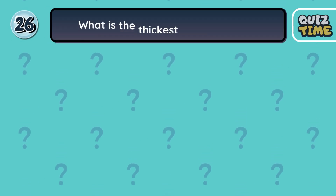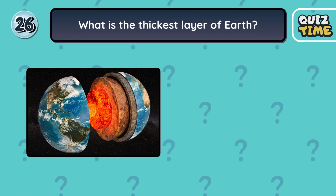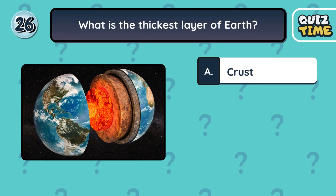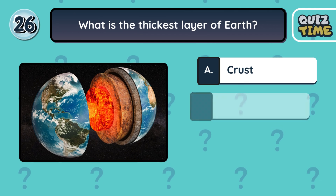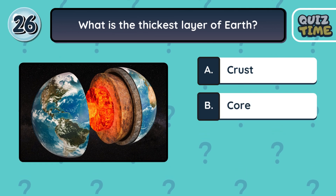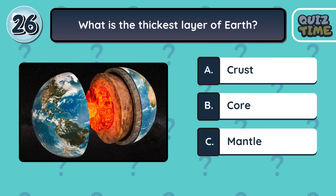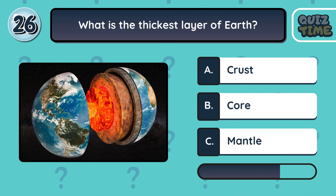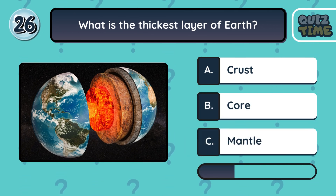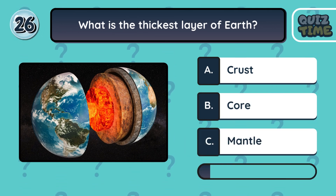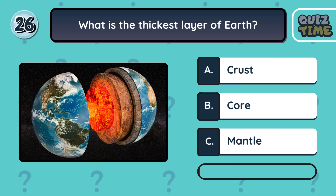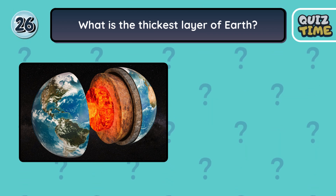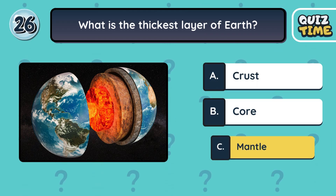Number 26. What is the thickest layer of Earth? A. Crust. B. Core. C. Mantle. The correct answer is C. Mantle.